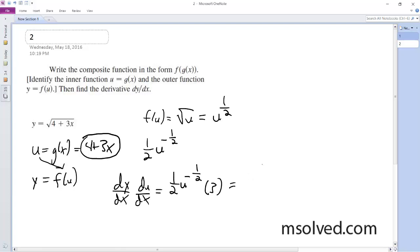So this ends up being 3 over 2 square root of 4 plus 3x, which is the same thing as quantity 4 plus 3x raised to the negative 1 half. And this is it, this is our derivative, using the chain rule.